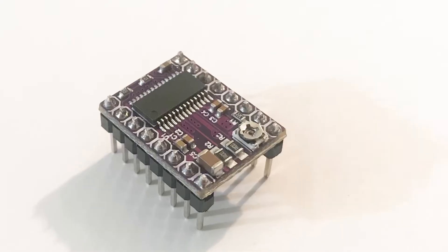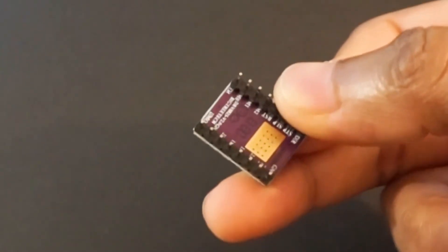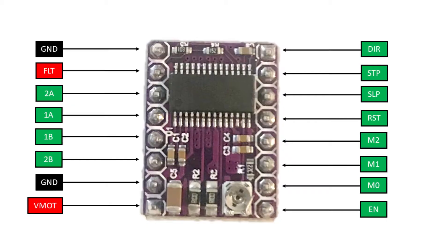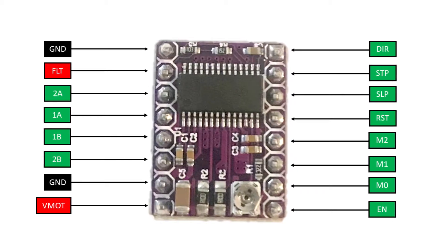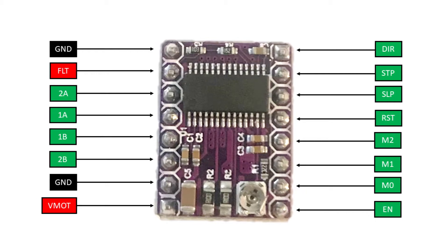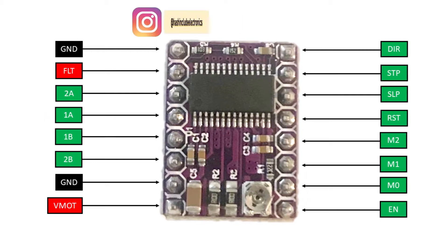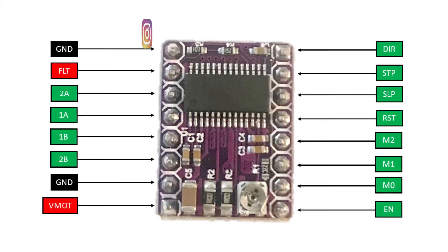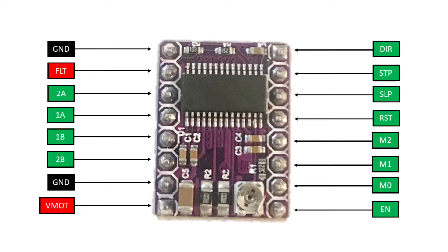We are using DRV8825 driver. This driver has better current capacity around maximum 2.2 ampere per phase. This module has following pins: enable pin, M0 to M2 pins which are used to select the step size, reset, sleep, step and direction pin, V-motor and ground pins which are used to supply power to stepper motor, B2, B1, A1, A2 pins which are used to connect stepper motor to driver, fault and ground pin.